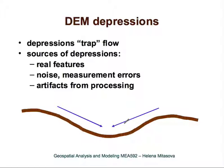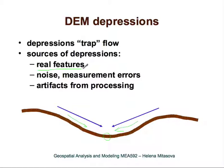Depressions essentially trap flow, so they are different from flat areas. Flat areas don't have a defined gradient. Depressions have a defined gradient — except for the lowest point — but that gradient points toward the lowest point in the depression, so they trap flow. These depressions in digital elevation models can be real features, or they can be due to noise or measurement errors — for example in lidar data — or they can be artifacts from processing.